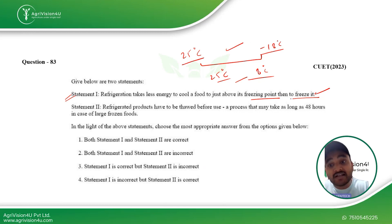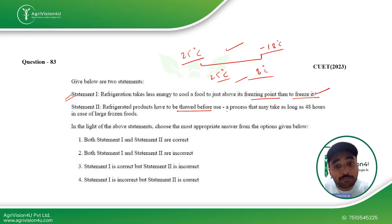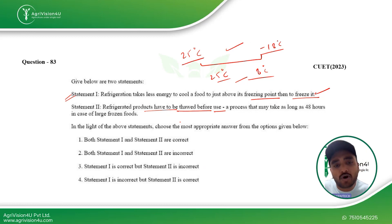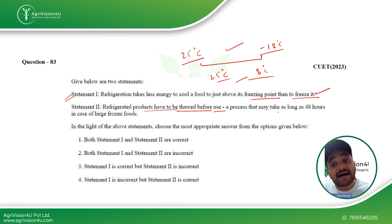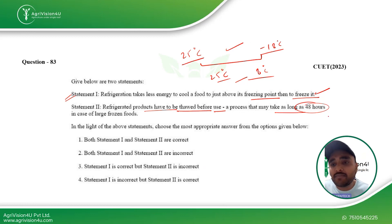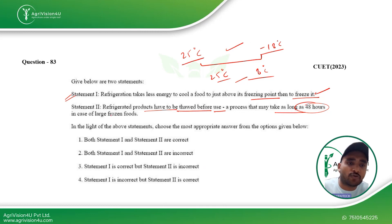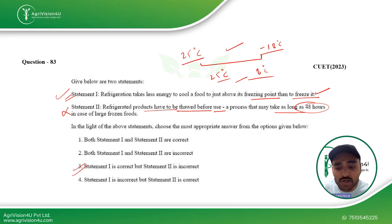Statement two — refrigerated products have to be thawed before use — is wrong, because only frozen foods need to be thawed. Refrigerated foods are already at ambient conditions. Also, the statement claims thawing can take as long as 48 hours, which is incorrect — around 30 minutes to one or two hours is enough. Statement one is right and statement two is wrong, making the third option the correct answer.